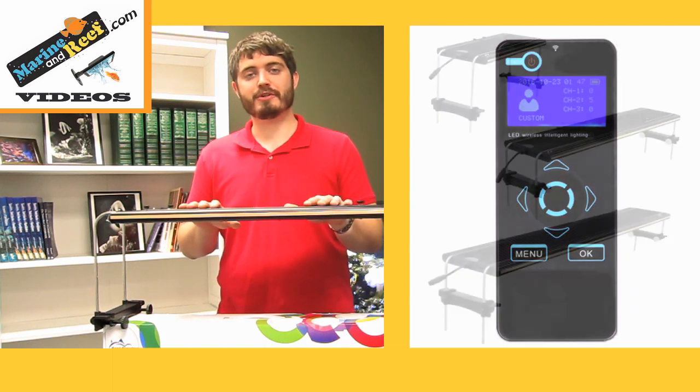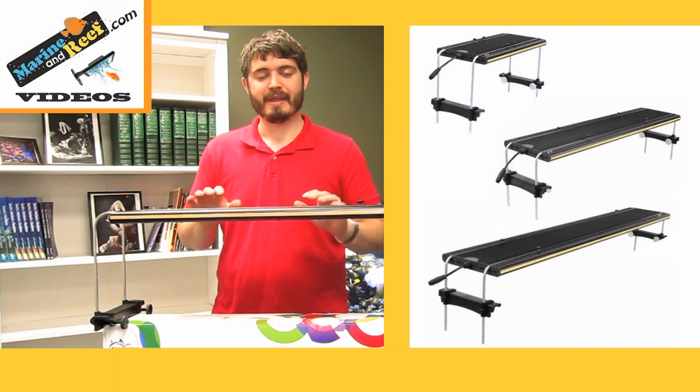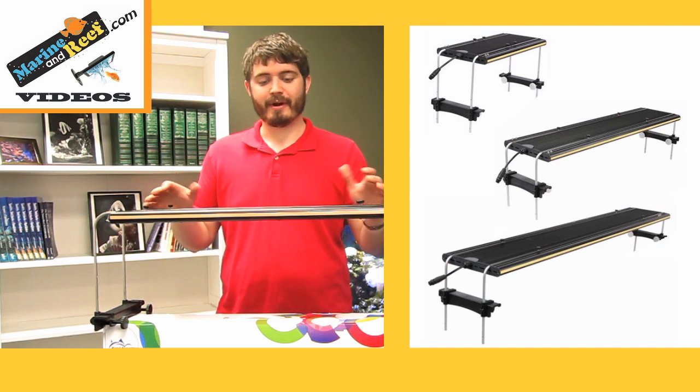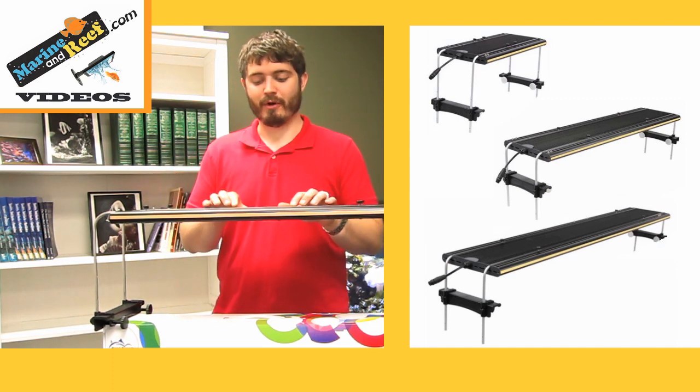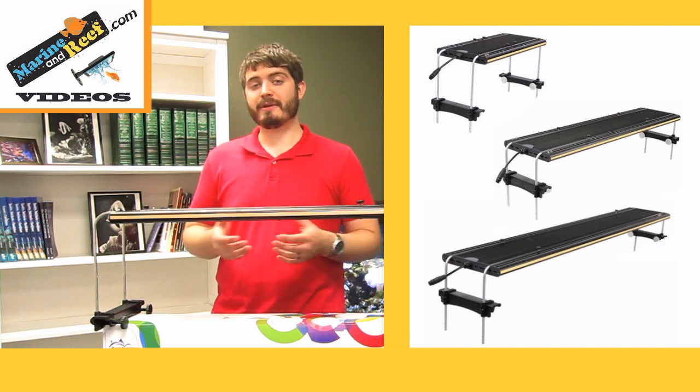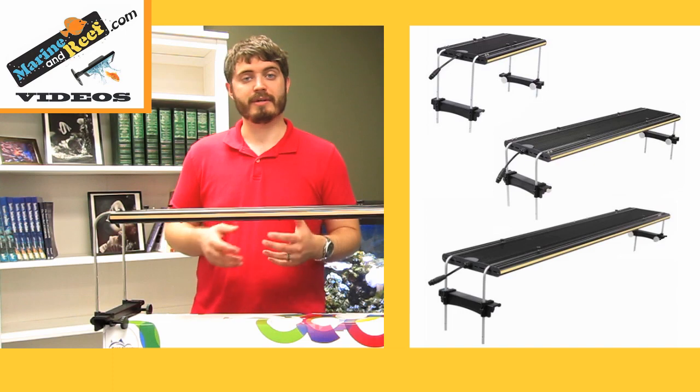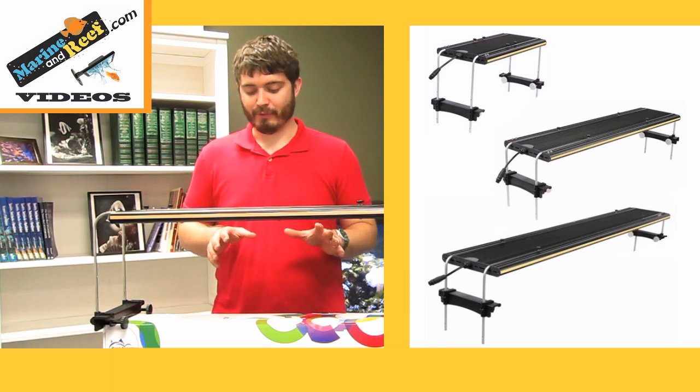So when it comes to choosing the right size light for your aquarium, the main thing to consider is your aquarium length. If you have a 24-inch aquarium, a light like this Photon 24 will be perfect, and it really should be about as much light as you'd ever need. It's not something you should need to upgrade down the road. It's plenty of light. It's at an affordable price point.